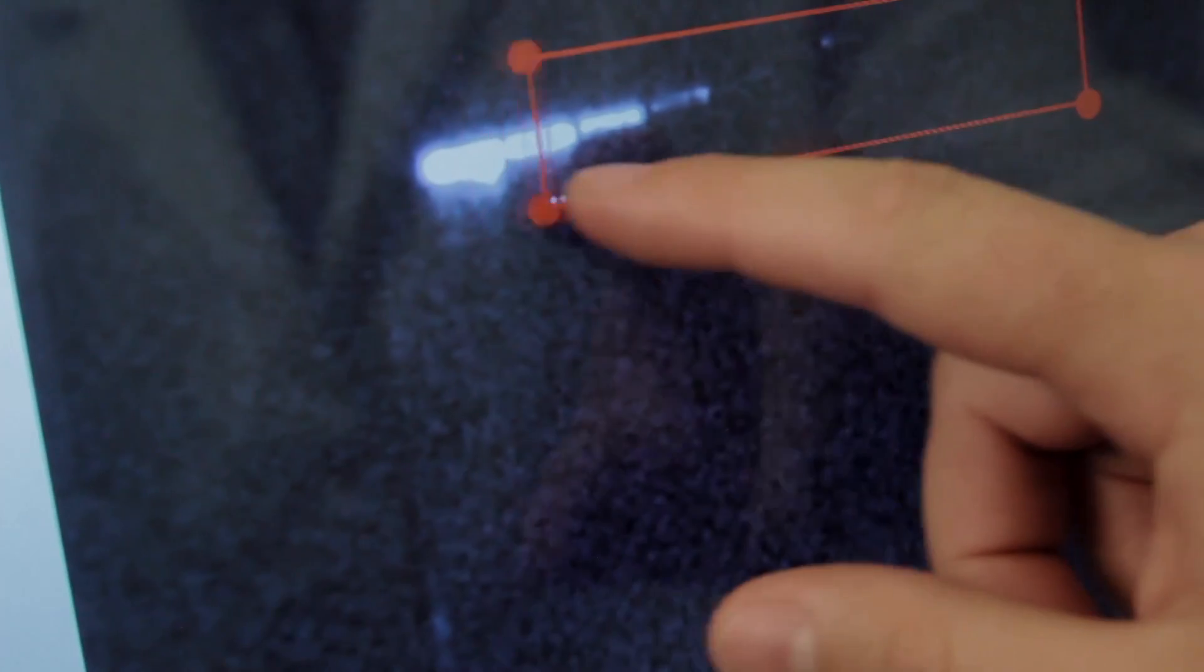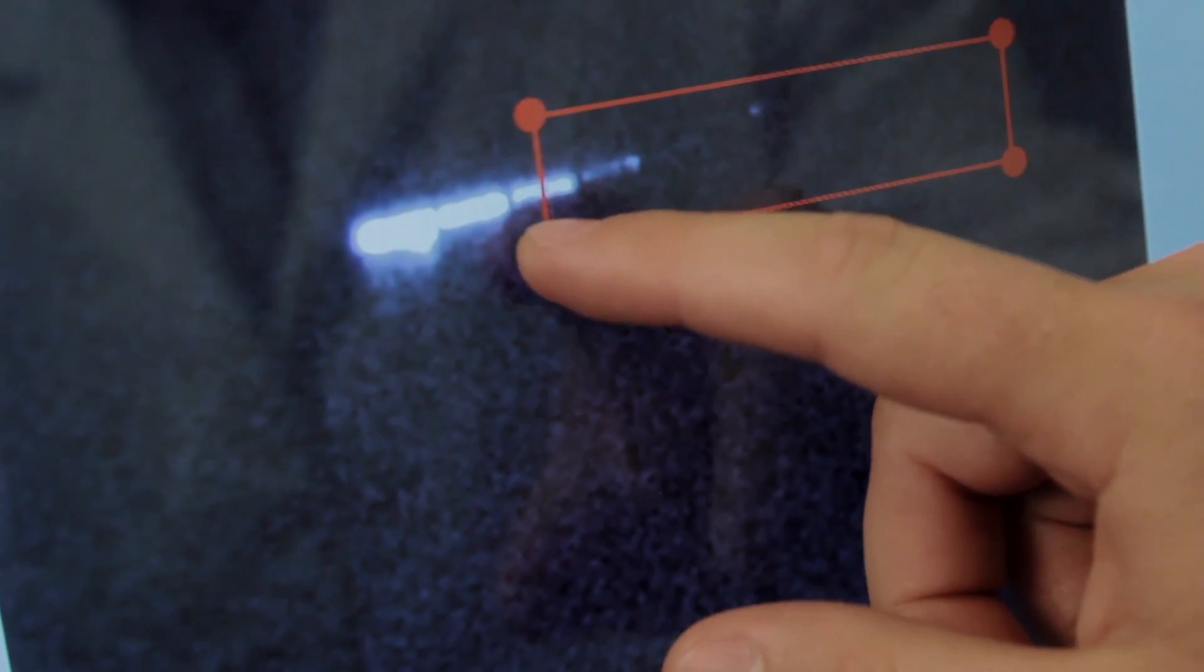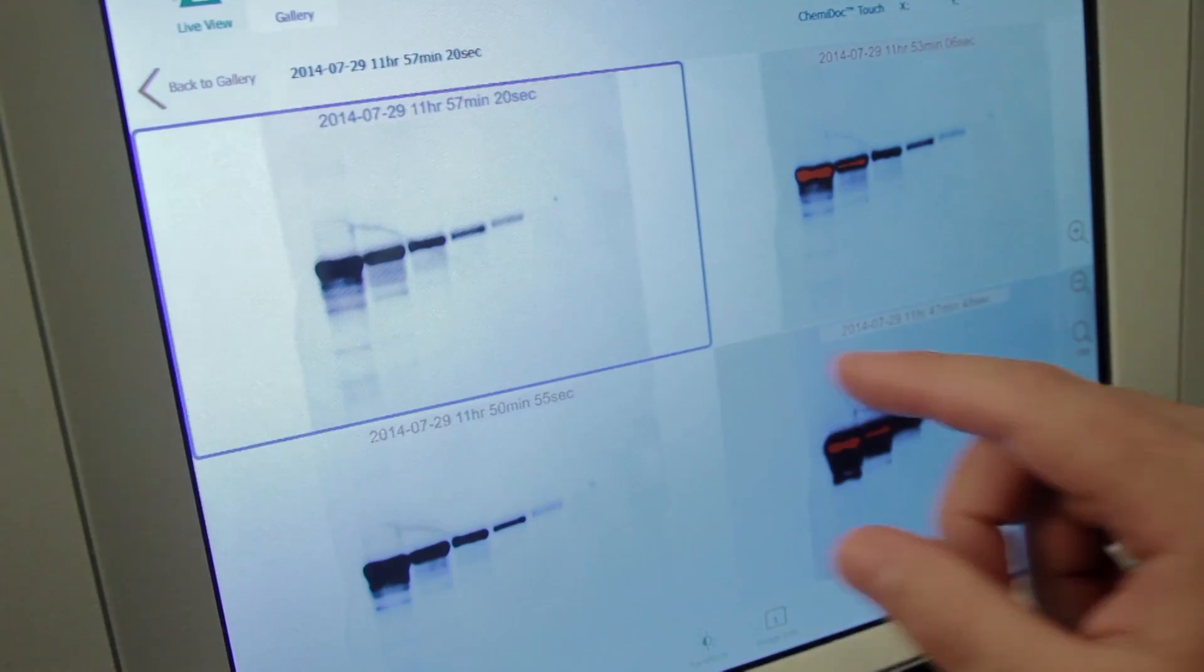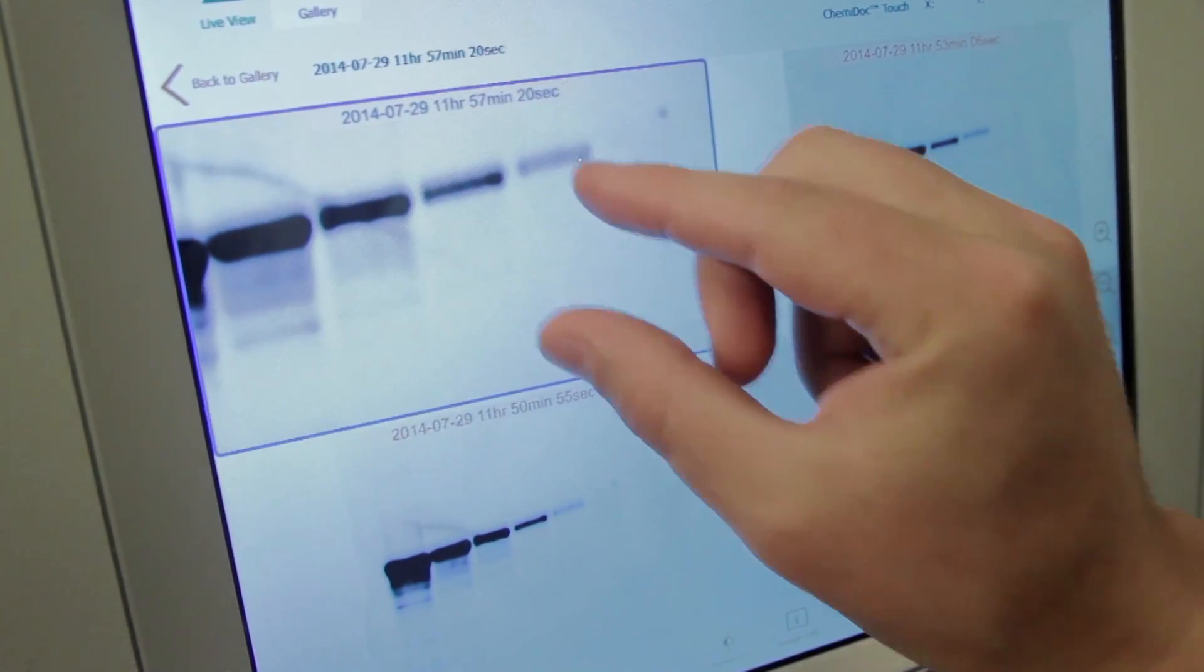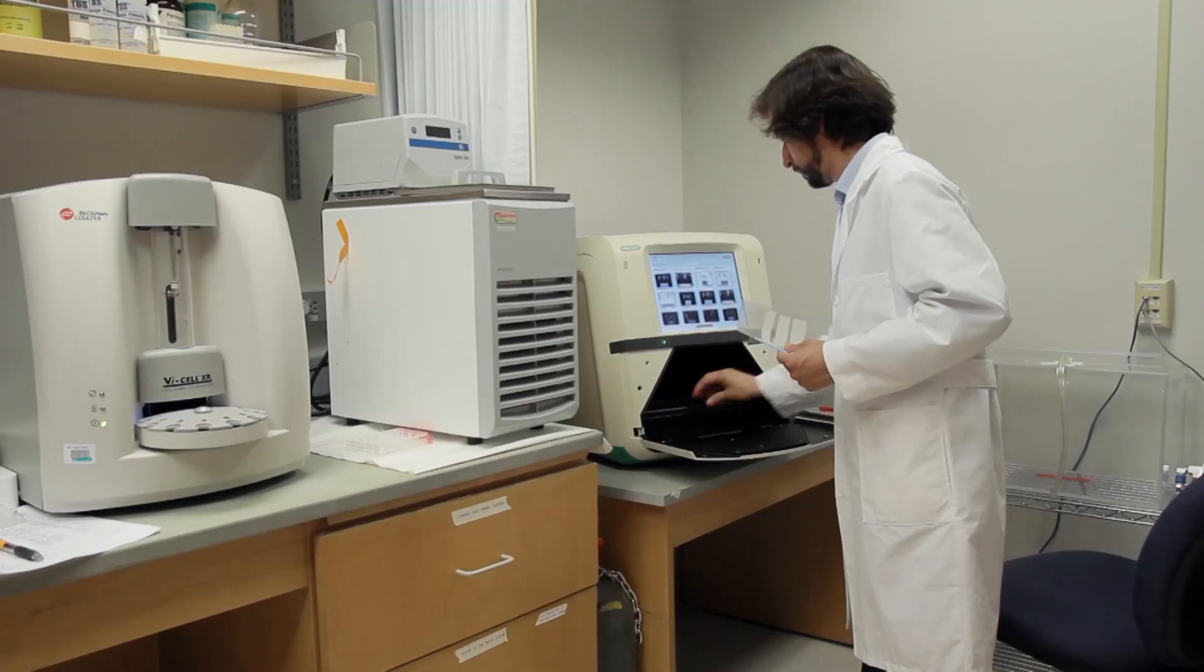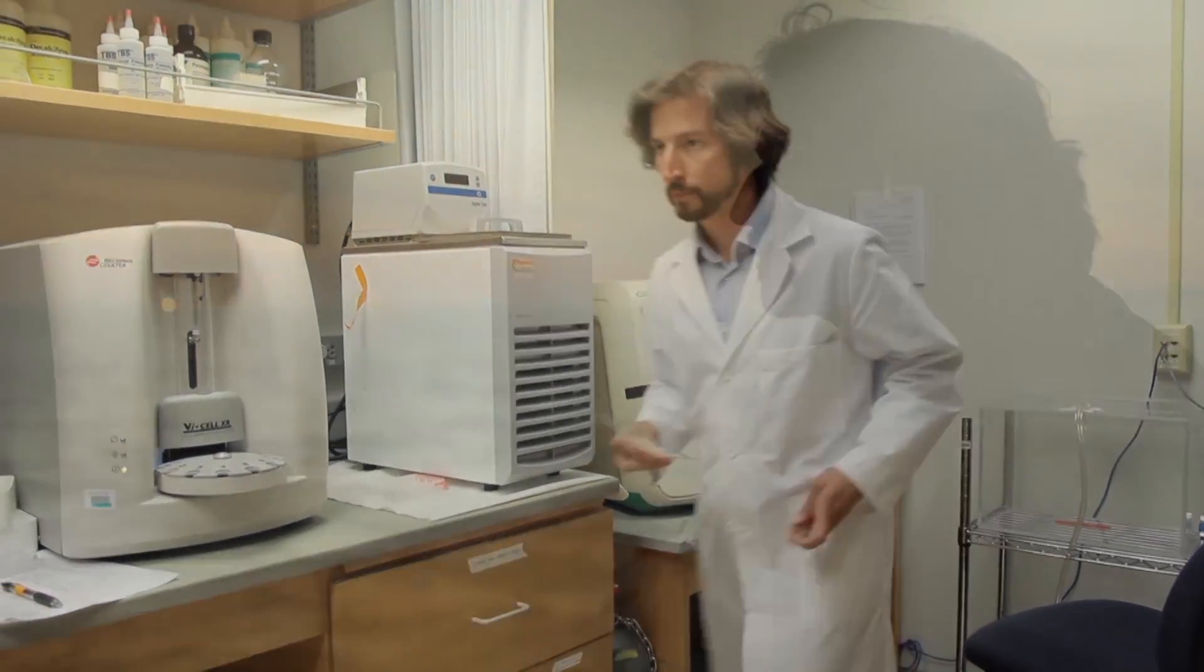With the ChemiDoc Touch, that problem got solved. Because in one moment, you can very rapidly get a very sensitive image. And it will expose the best for each band. You can adjust, you can select the protein, you can resize the protein, you can do comparisons. So it's a very fast and very reliable way to get your protein analysis data, as opposed to the old conventional film approach.